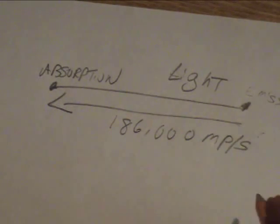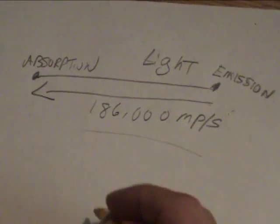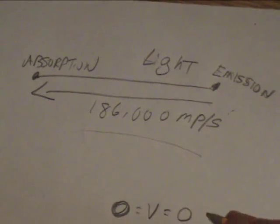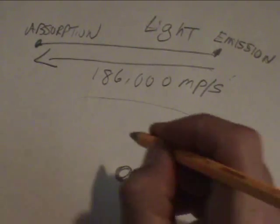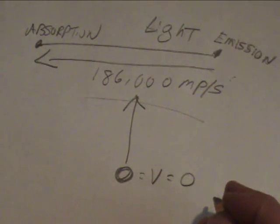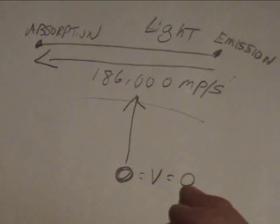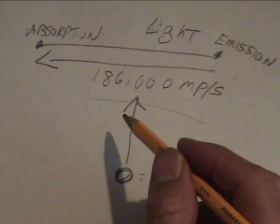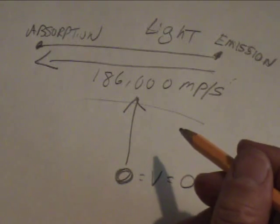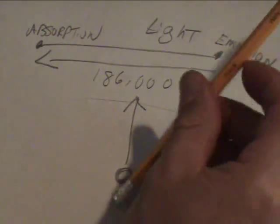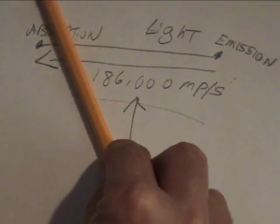Now here you have an observer — a stationary observer equals zero. Velocity equals zero right here, which observes this: 186,000 miles crossing the sky, crossing space. Now if something is stationary and something else is moving, time is relative. So it doesn't matter if this point right here is stationary, as long as this other point appears moving across the sky.